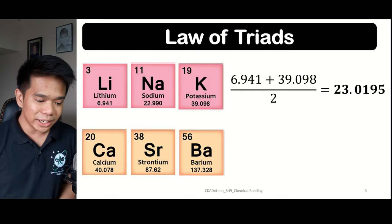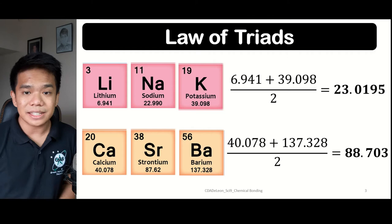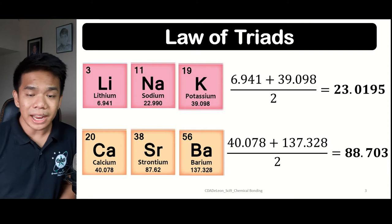Another example is the triad of calcium, strontium, and barium, wherein the average of the atomic masses of calcium and barium is equal to 88.703, which is the rough estimate for the atomic weight of strontium, which is 87.62.